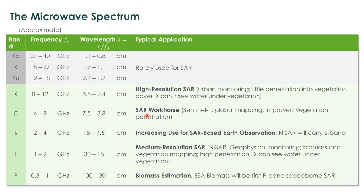I want to briefly discuss the different flavors of radar available. Similar to colors in the visual range, the microwave spectrum is split into subbands designated by letters: X, C, S, L, and P. These distinguish different wavelength ranges in the microwave spectrum.